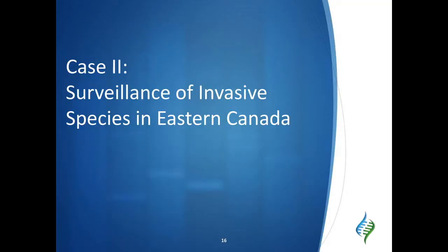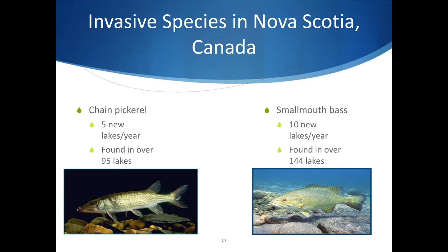For our second case study, we're going to have a look at how eDNA has been used to monitor invasive species in Nova Scotia, Canada, and how eDNA surveys can help make informed decisions about invasive species management. The chain pickerel and smallmouth bass are two non-native top predator species in Nova Scotian lakes, spreading into approximately five to ten new freshwater lakes per year. Smallmouth bass was intentionally introduced into five lakes in the 1940s for recreational fishing, but the species has now established itself in over 144 lakes in Nova Scotia. Unfortunately, the chain pickerel was illegally introduced into three Nova Scotian lakes and is now found in over 95 lakes, including the Petite Riviere Lakes, home to the last remaining population of Atlantic whitefish in the world.